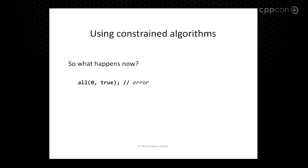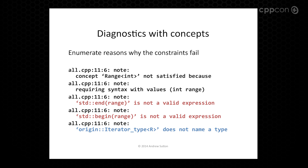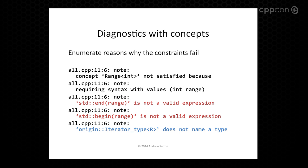So now we have this interesting question: what happens now? We have this nice new fancy support for defining concepts — how does this play with the diagnostic system? Well, obviously you can't call all_of with those values because we completely misunderstood the documentation of the function. But we get some very interesting output. The compiler will actually tell you that the concept range_of is not satisfied because with these values, begin is not a valid expression and end is not a valid expression.